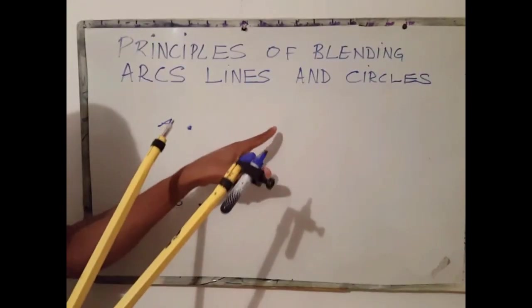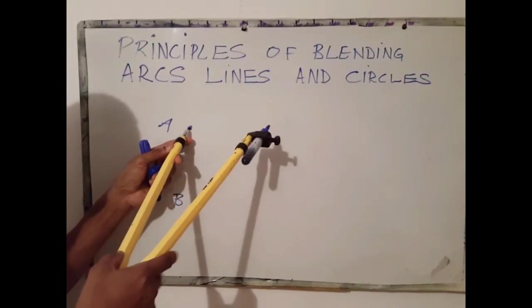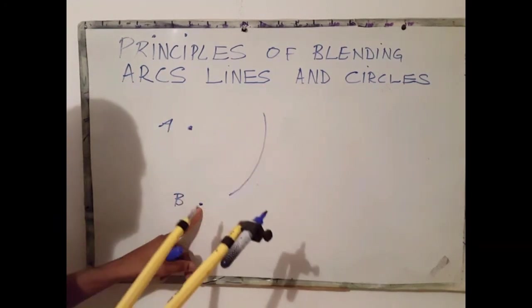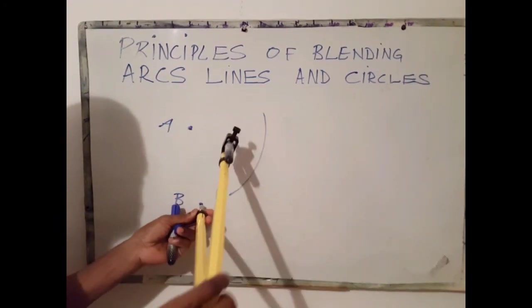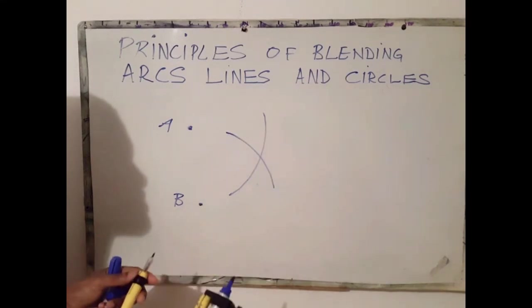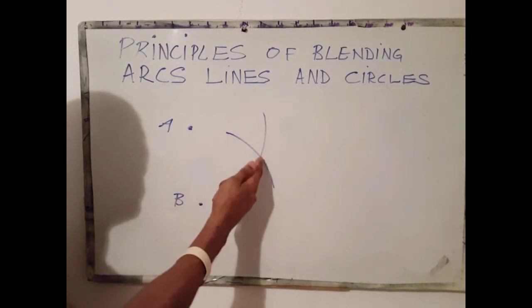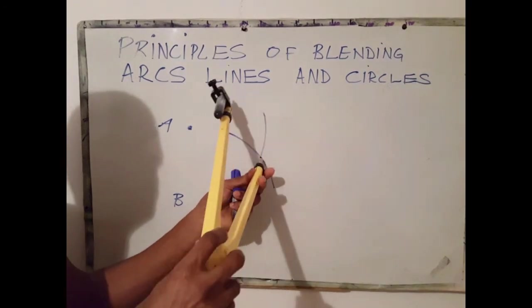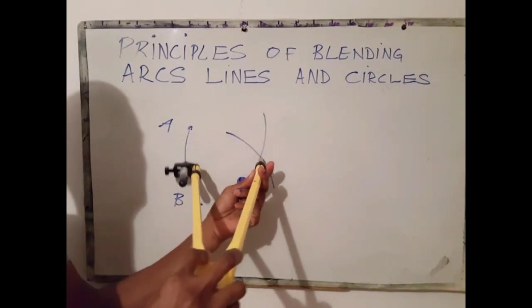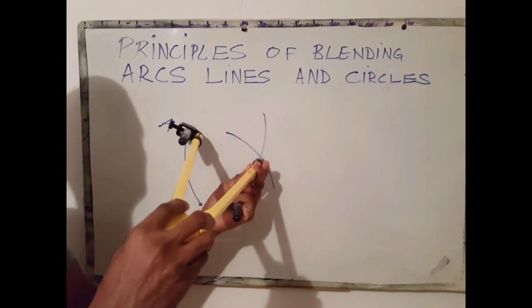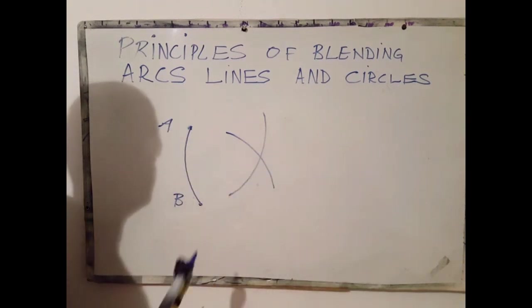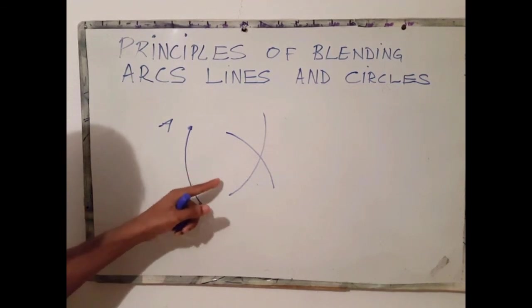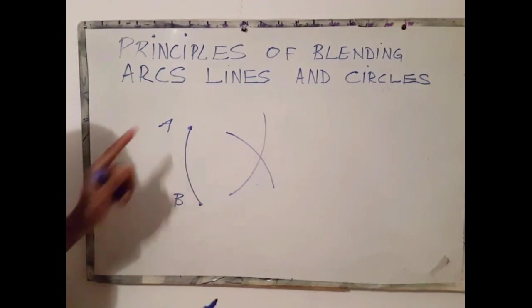Point A as a center, scribe my first arc, point B as center, scribe my second arc. At the point where both arcs meet would be my third center. And that is how I describe an arc of specific radius from two known points.